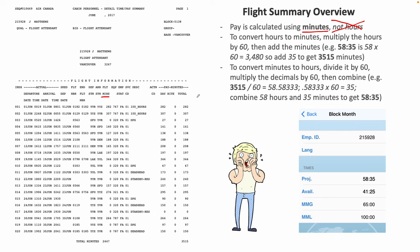There is a way to convert hours to minutes: take the number of hours and multiply by 60, then add the minutes. For example, with my June 2017 projected hours of 58 hours and 35 minutes, I take 58 multiplied by 60, which equals 3,480 minutes, then add the 35 minutes to get a grand total of 3,515 minutes.